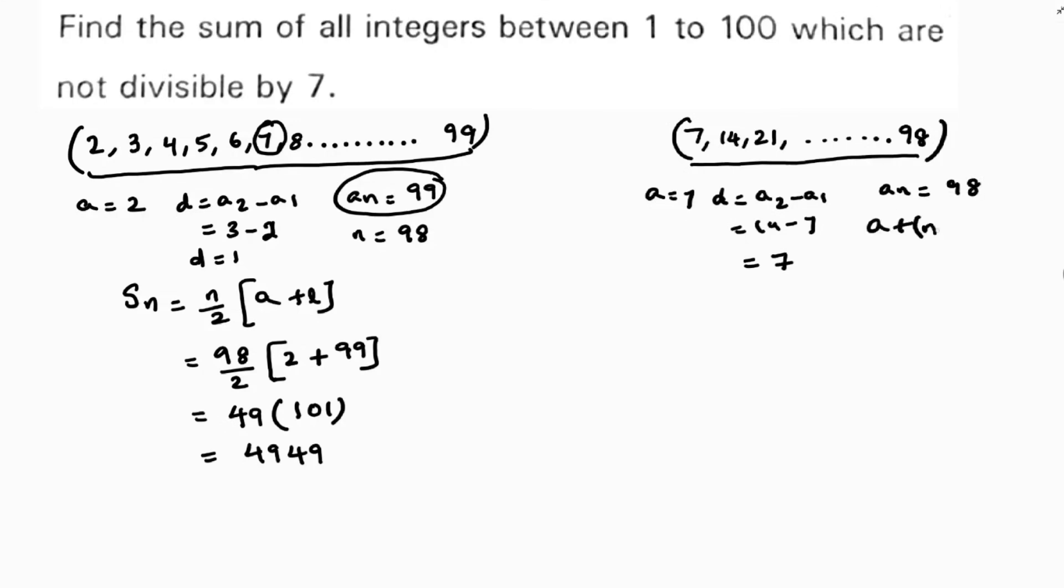an formula is a plus n minus 1 into d. See, we know 14 terms, but I am finding with the help of formula. 7 plus n minus 1 into 7 is 98. 7n minus 7 is 98. 7, 7 cancel. 7n is 98. n is 98 by 7. So n value is 14.